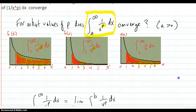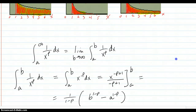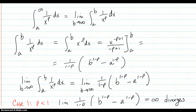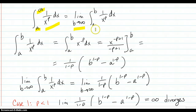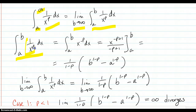So let's just see what happens. We're going from a to infinity of the integrand, which is defined as the limit as b goes to infinity of the integral from a to b of 1 over x to p dx. You rewrite 1 over x to p as x to negative p, do the integration, work it all out, and you get this expression.